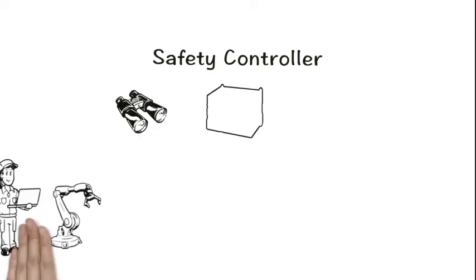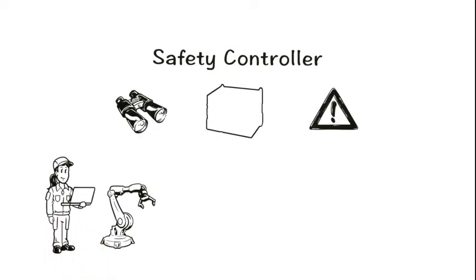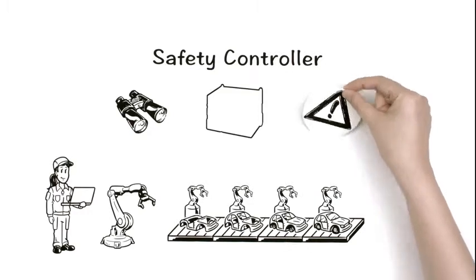A safety controller monitors workers and machinery and, in case of danger, stops the line or equipment.